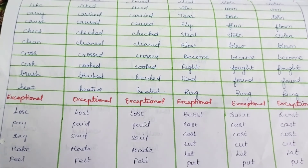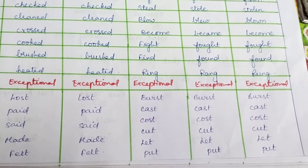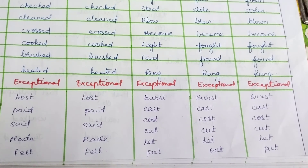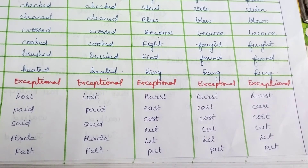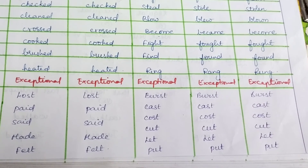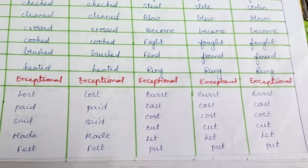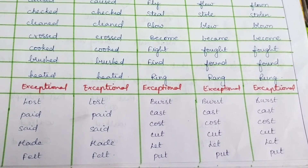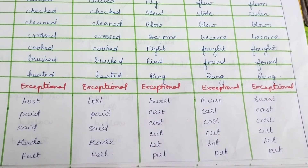And a few more exceptionals like: burst, burst, burst; cast, cast, cast; cost, cost, cost; cut, cut, cut; let, let, let; put, put, put. There are a few more such exceptionals still.